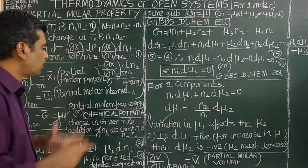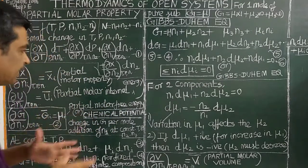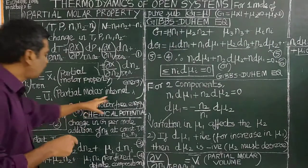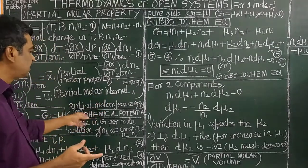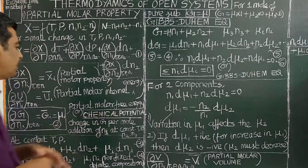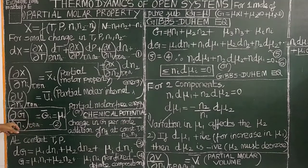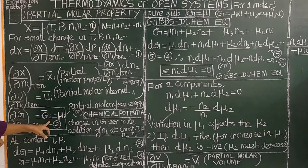Partial molar free energy is also called Chemical Potential — this is very important, especially at the PG level. So what is the partial molar free energy? It is the chemical potential μi of component i: the variation of free energy with respect to change in number of moles of the ith component, at constant temperature and pressure. That is called μi.